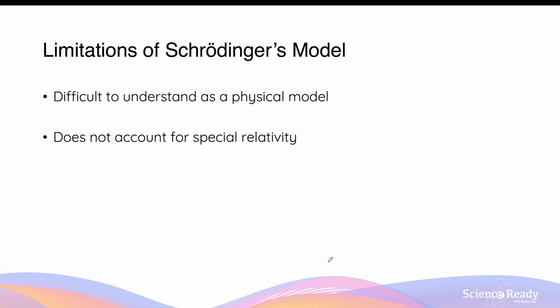The limitations of Schrödinger's model are quite difficult to understand unless you're delving deeper into quantum physics. Schrödinger's model is quite difficult to understand as a physical model of the atom — a big difference from Bohr's model where he actually described the physical path of electron orbits. Additionally, Schrödinger's model and its equations and mathematical predictions do not account for Einstein's theory of special relativity.